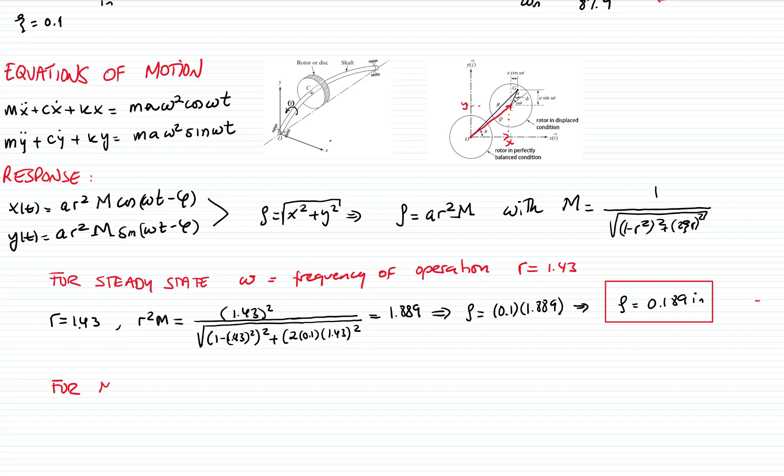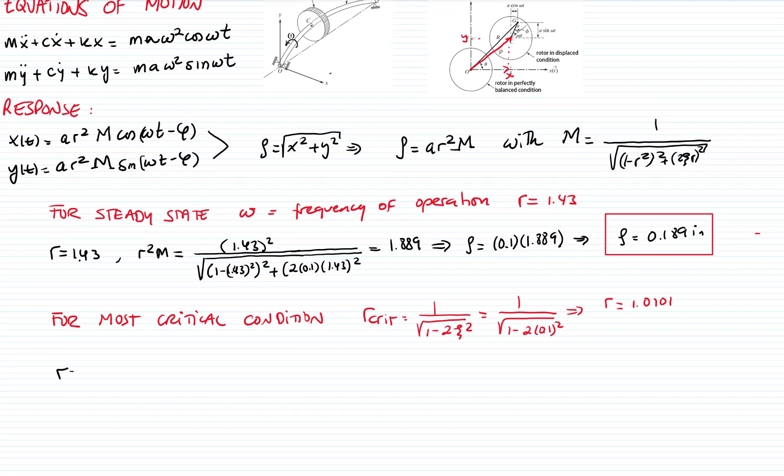Now let's do the same for the most critical condition. You recall that for the most critical condition, r equals 1 over square root of 1 minus 2ζ². If I plug in the values, I get that r critical is 1.0101. It's very close to resonance because we have very small value for damping, for ζ, which is 0.1.